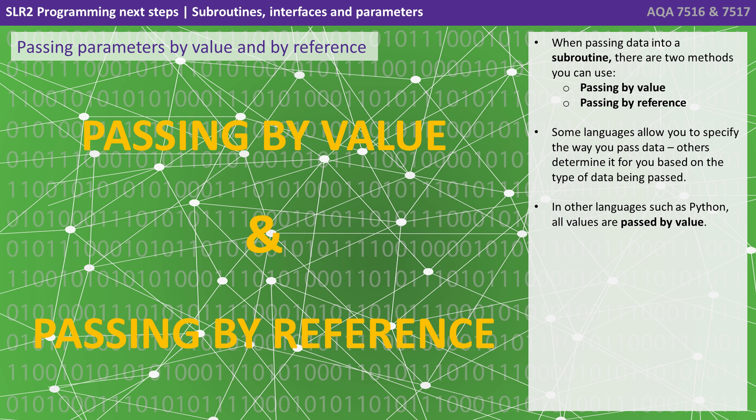So when passing data into a subroutine, there are two methods you can use. Passing by value and passing by reference. Some languages allow you to specify the way you pass data. Others determine it for you based on the type of data being passed. In other languages, such as Python, all values are passed by value.